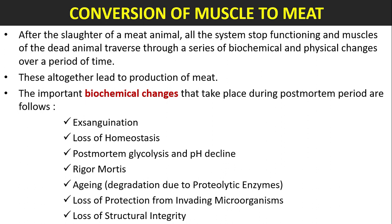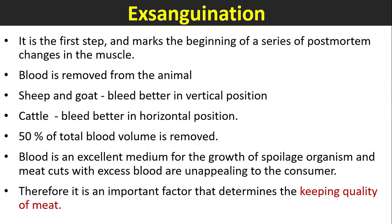Conversion of muscle to meat: After slaughter of a meat animal, all systems stop functioning and the muscles traverse a series of biochemical and physical changes over a period of time, leading to the production of meat. The important biochemical changes during the post-mortem period are: exsanguination, loss of homeostasis, post-mortem glycolysis and pH decline, rigor mortis, aging, loss of protection from invading microorganisms, and loss of structural integrity.